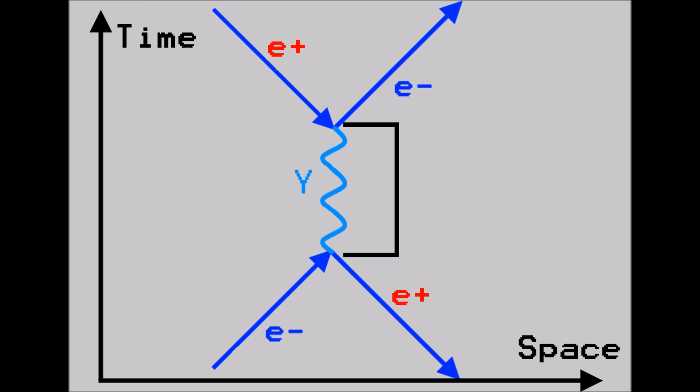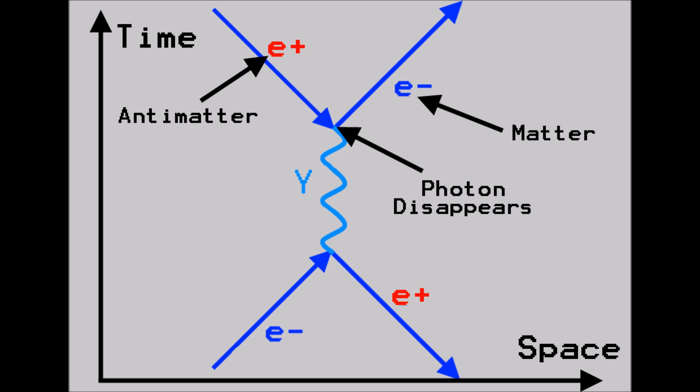This photon propagates uninterrupted for a while, before it too disappears and is replaced once again with an electron and a positron. This phenomenon you may know of as pair production.